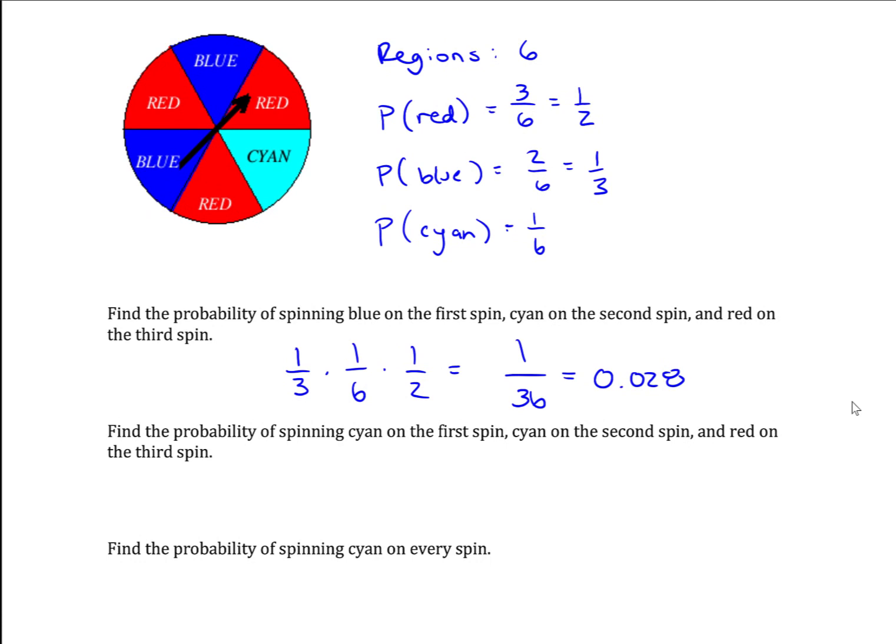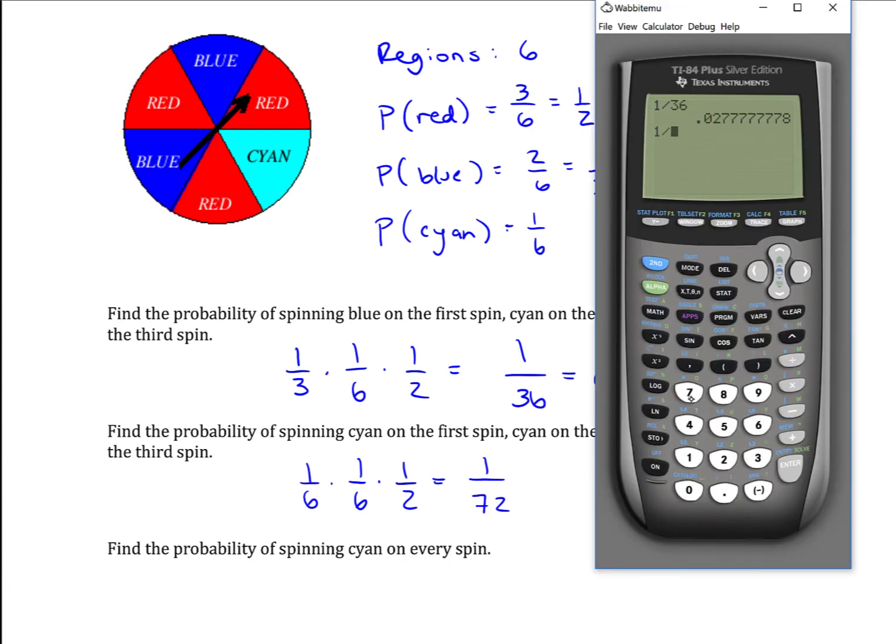Find the probability of spinning cyan on the first spin, cyan on the second spin and red on the third spin. So cyan on the first is one sixth. Cyan on the second is one sixth. Red on the third is one half. So one in the numerator, six times six is 36 times two is 72. So one over 72 gives me 0.014.